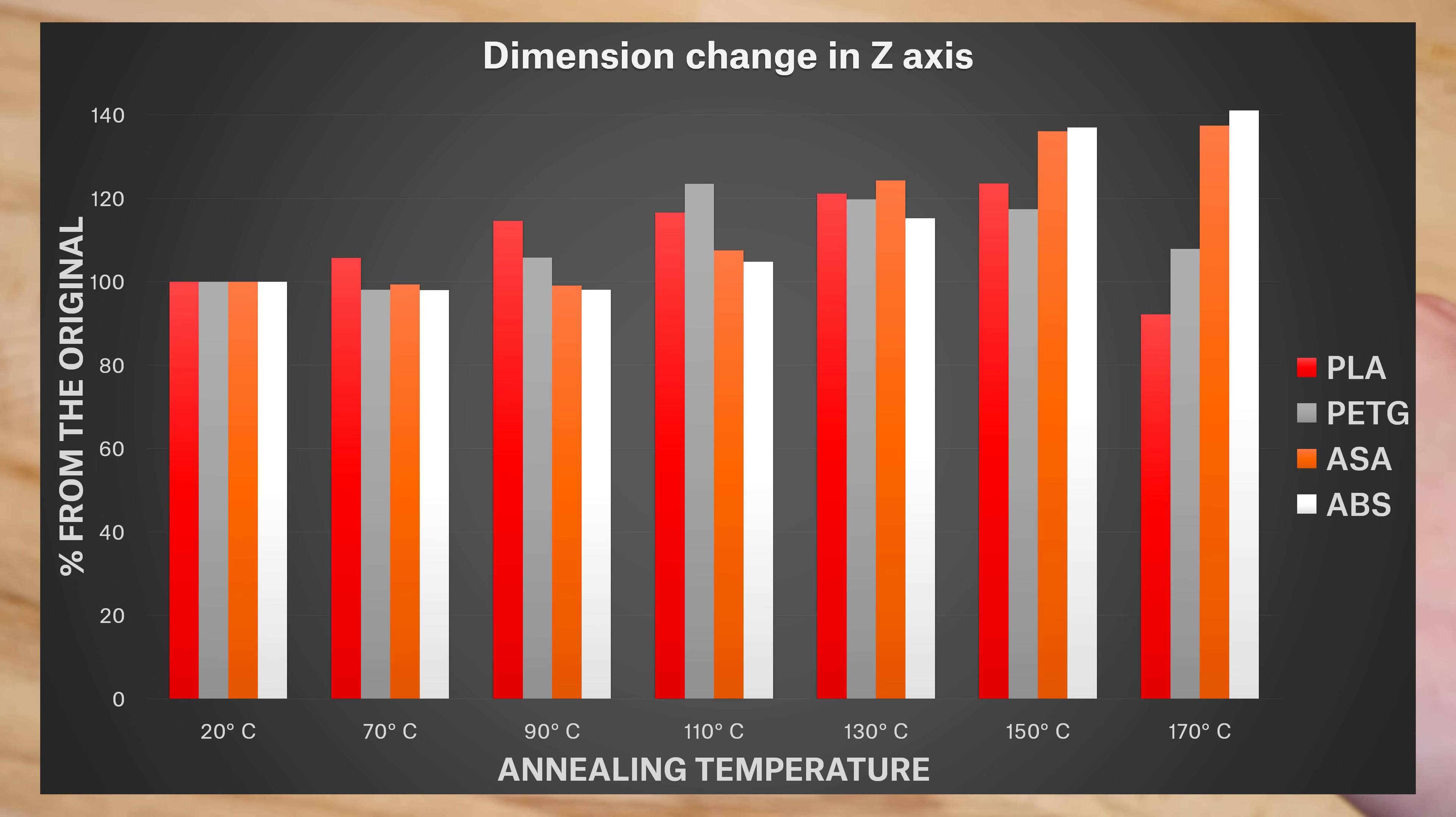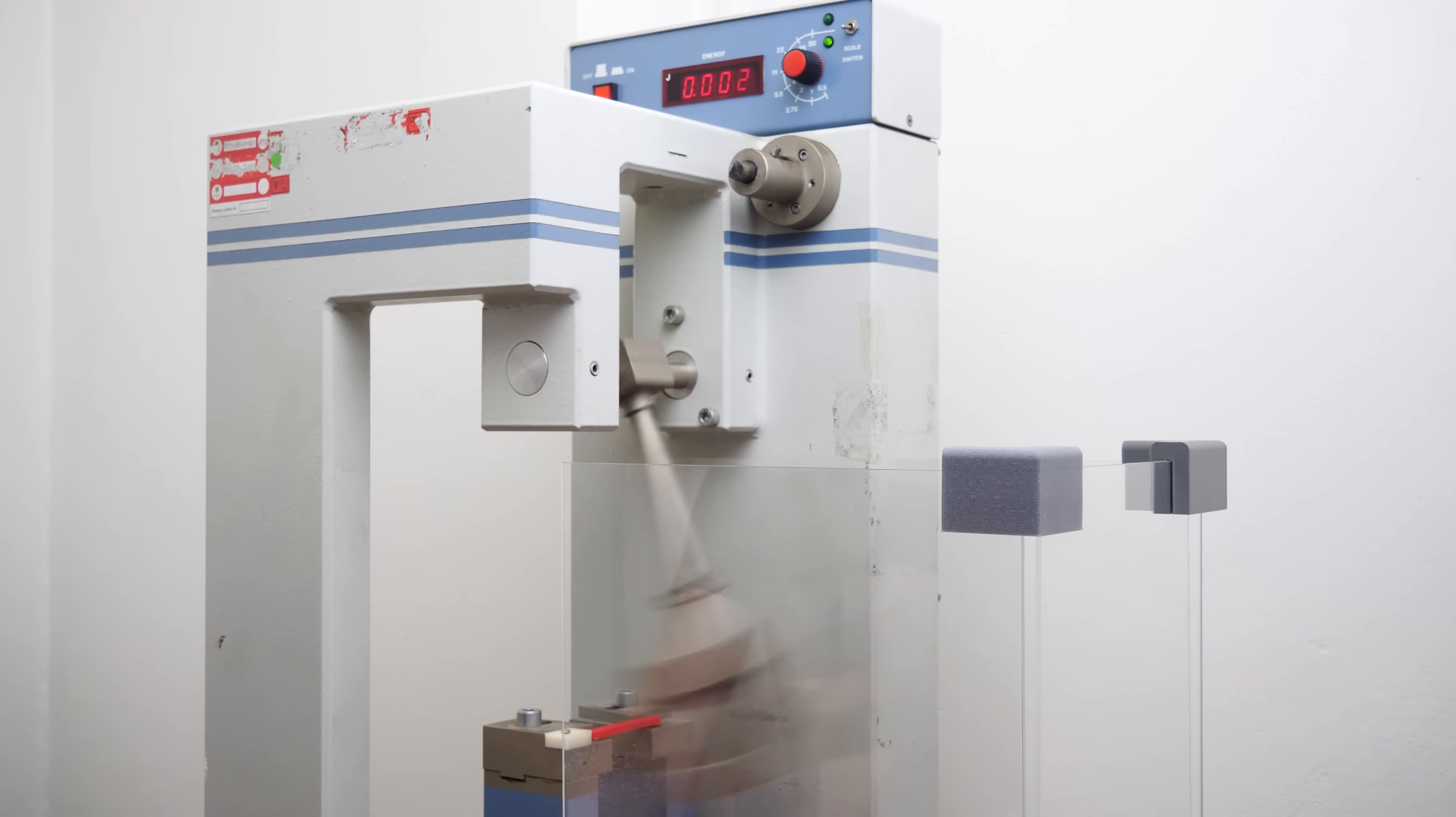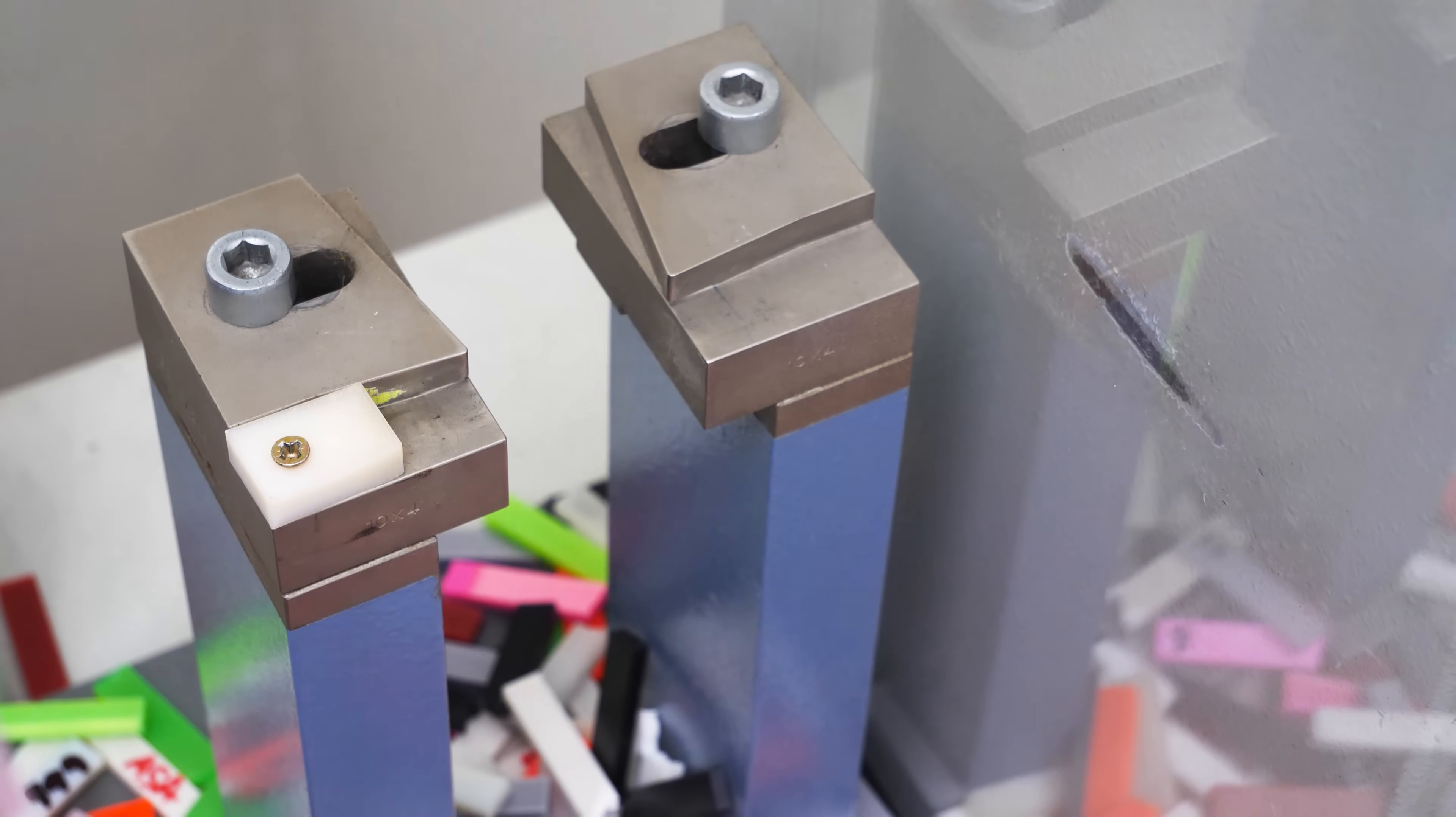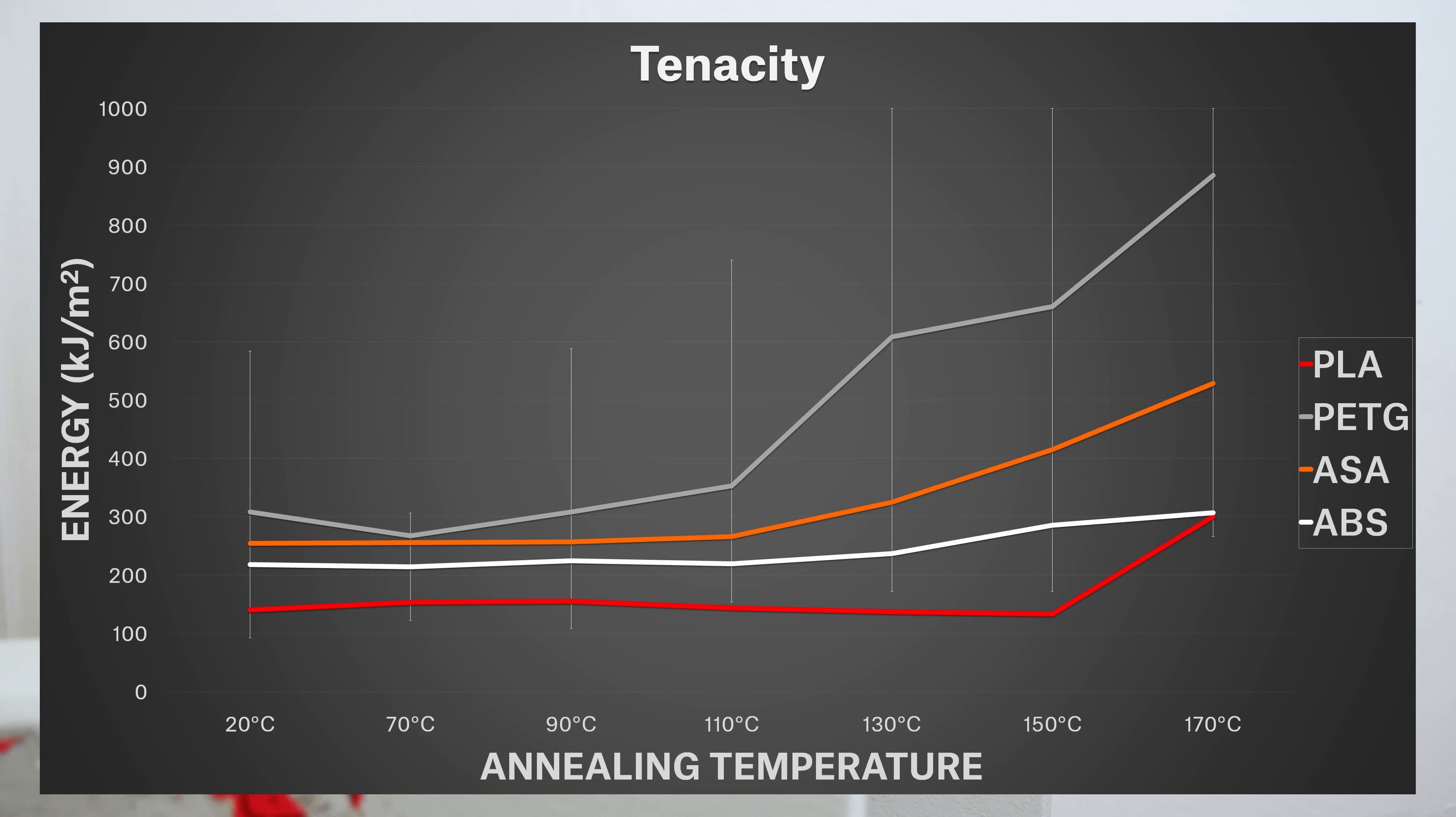The first test revealed that temperature affects PLA, PETG, ASA and ABS differently. Next, we tested the toughness of annealed materials using a Sharpie pendulum. We made 20 testing objects for each combination of material and temperature, and the results were averaged. PETG was the clear winner here. It was the only material that has repeatedly survived up to 1000 kJ per square meter.